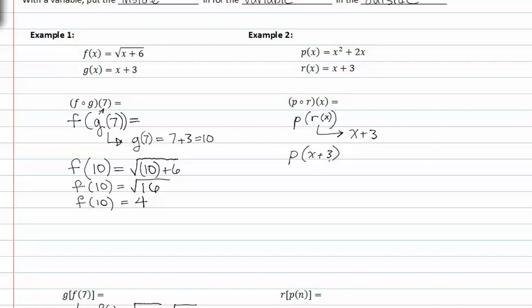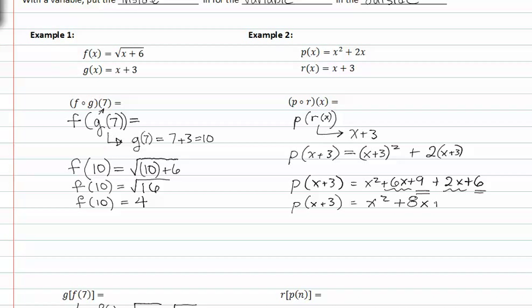Now we can write p of x plus 3 as x squared plus 2 times x, where x is now x plus 3. So p of x plus 3 is equal to x squared plus 6x plus 9 plus 2x plus 6 when I distribute the two and when I FOIL the x plus 3. So p of x plus 3 is equal to, combining like terms, x squared plus 8x plus 15.